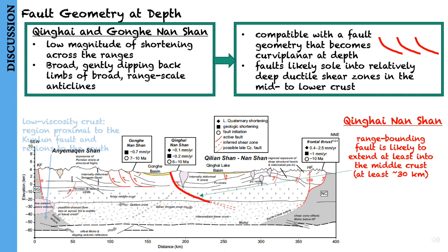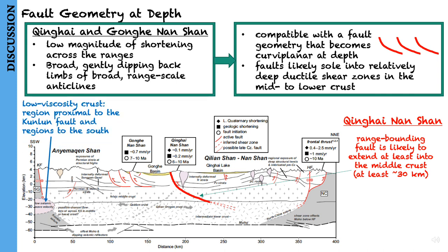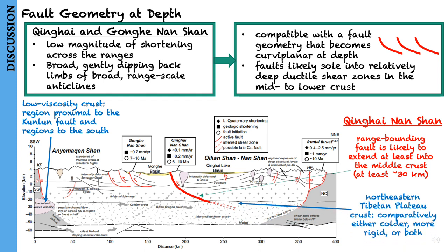Analyses of crustal conductance, Vp/Vs ratios, Bouguer gravity anomalies, and shear wave velocities all suggest that localized regions of relatively low-viscosity crust appear to be confined to the region proximal to the Kunlun fault and regions to the south. The crust beneath the northeastern Tibetan Plateau appears to be comparatively either colder, more rigid, or both.